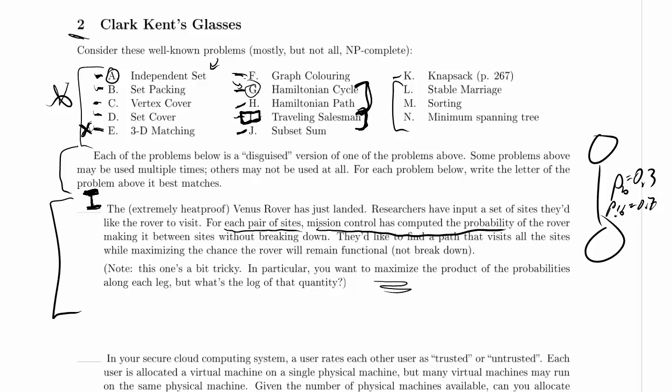Now, in traveling salesman, we add up the costs along the way. But with probabilities, we're going to multiply costs along the way. So if we have the probability that it will not break down along one edge, then the probability that it will not break down in two steps will be the product of those probabilities.